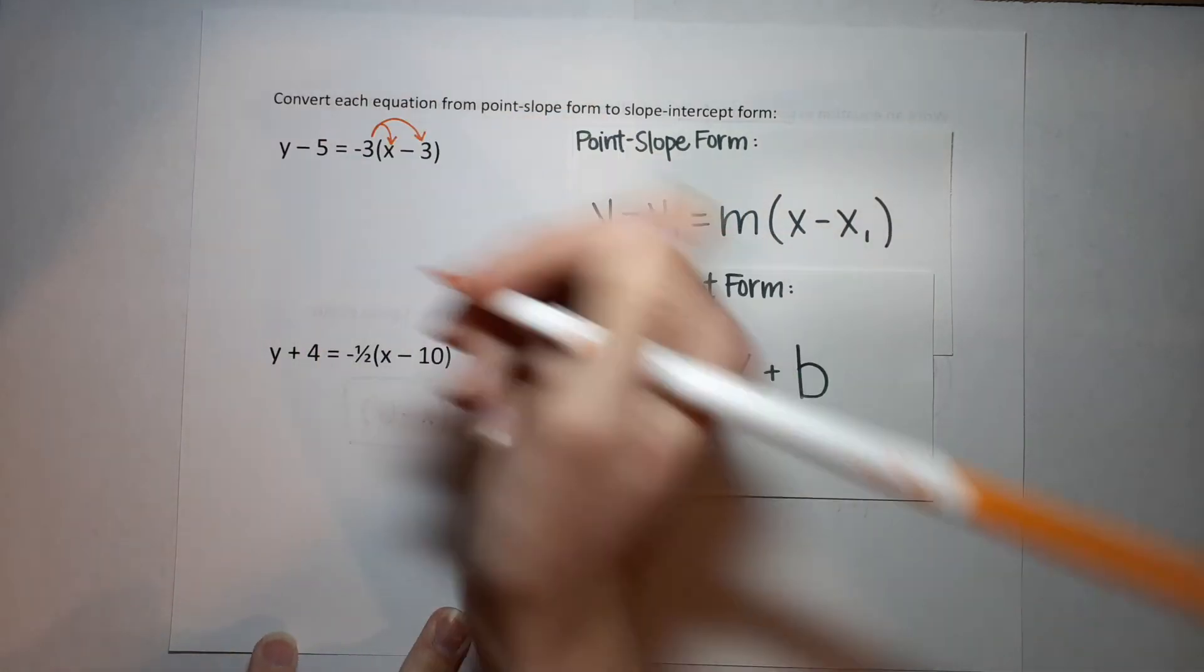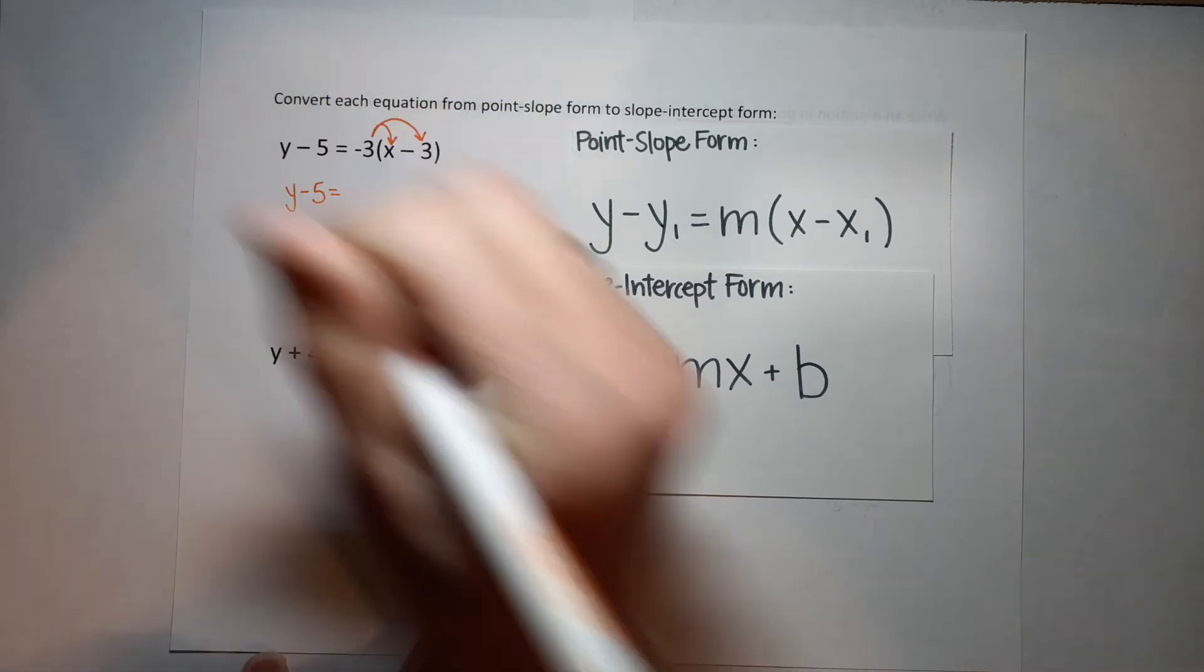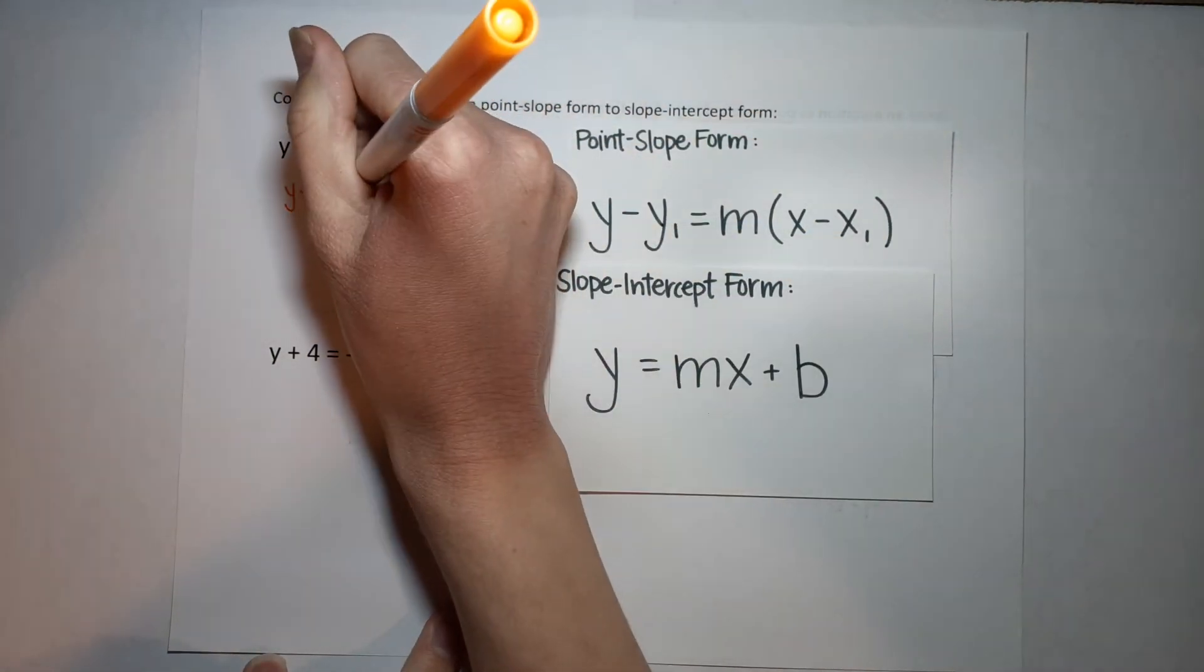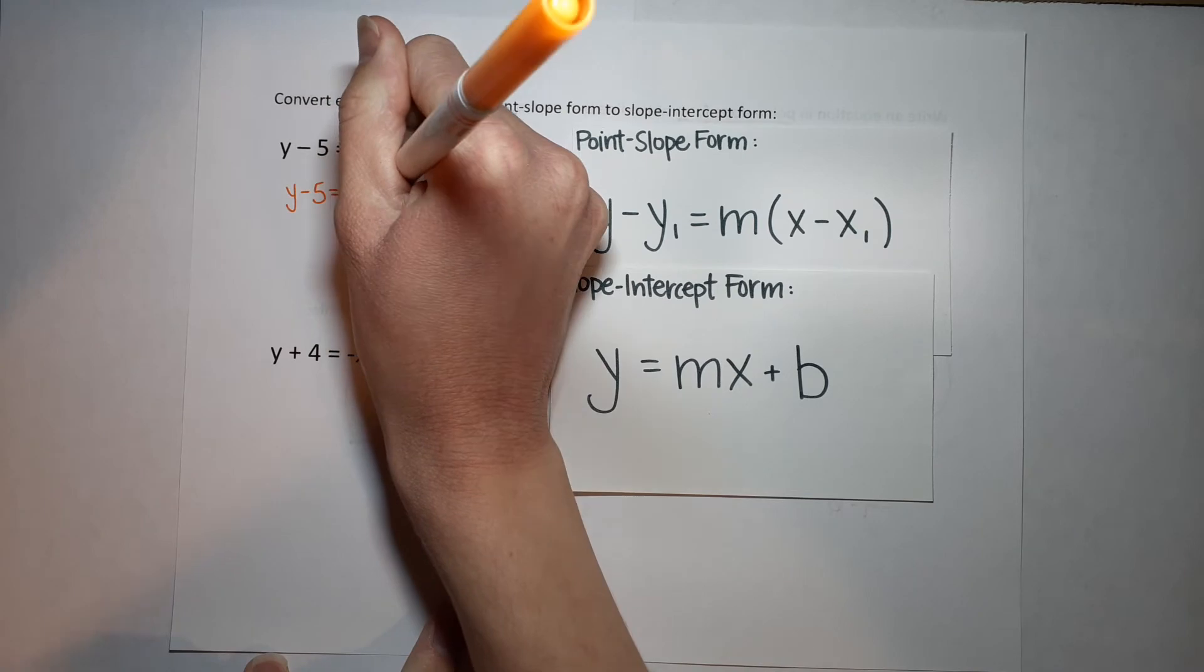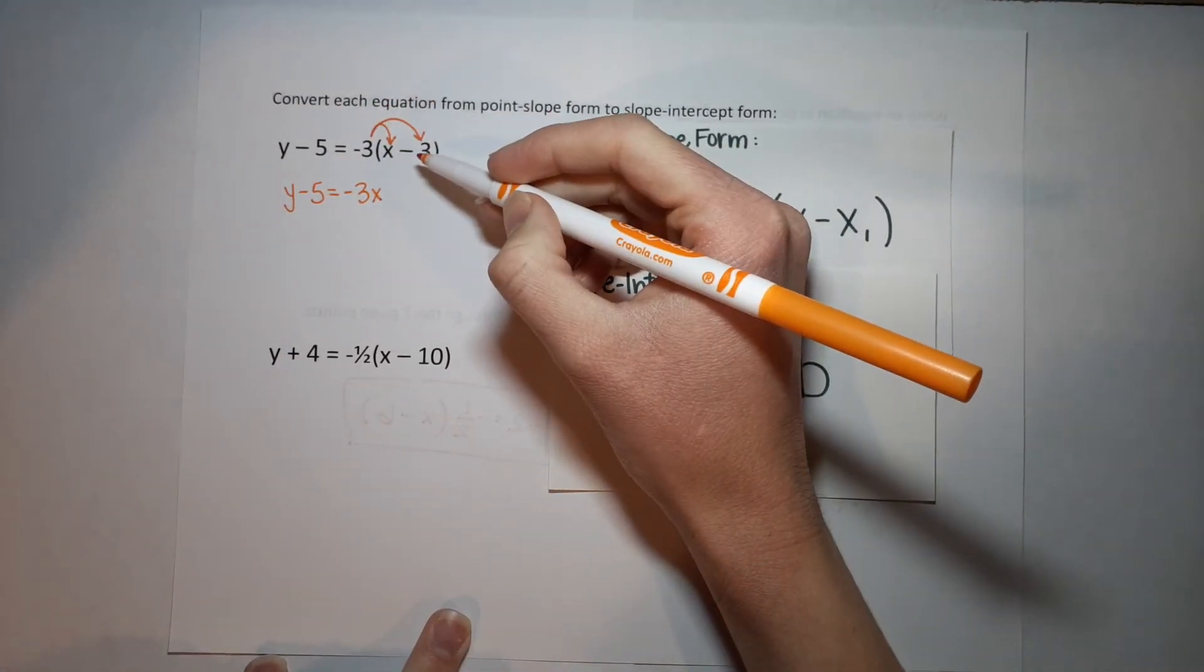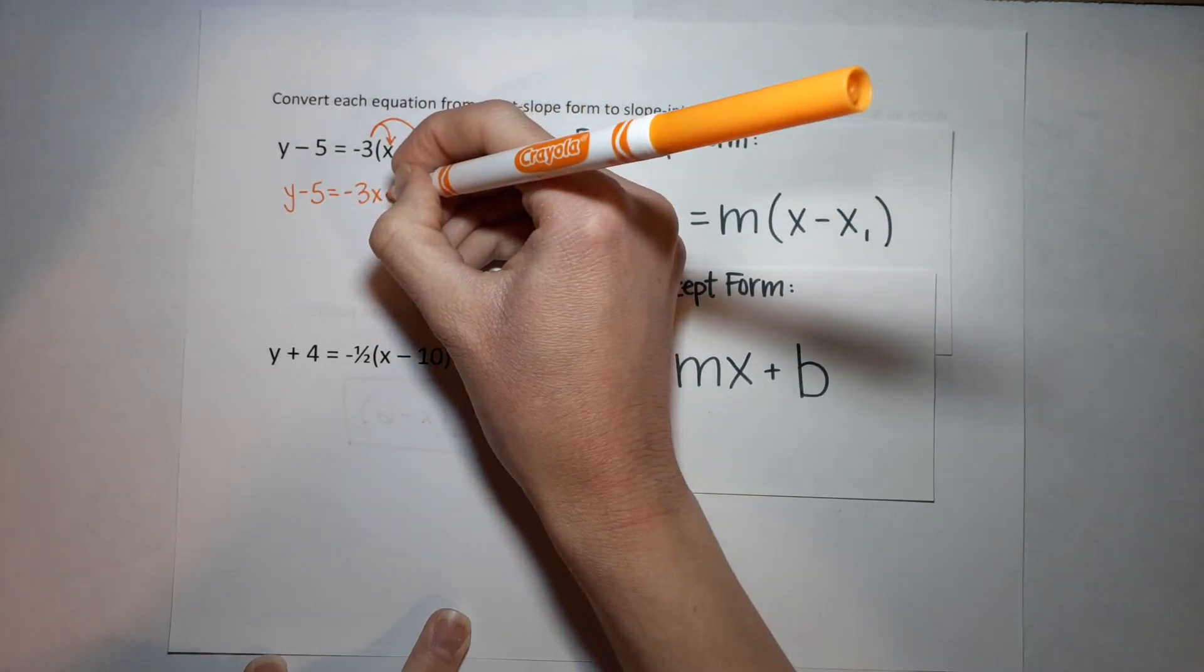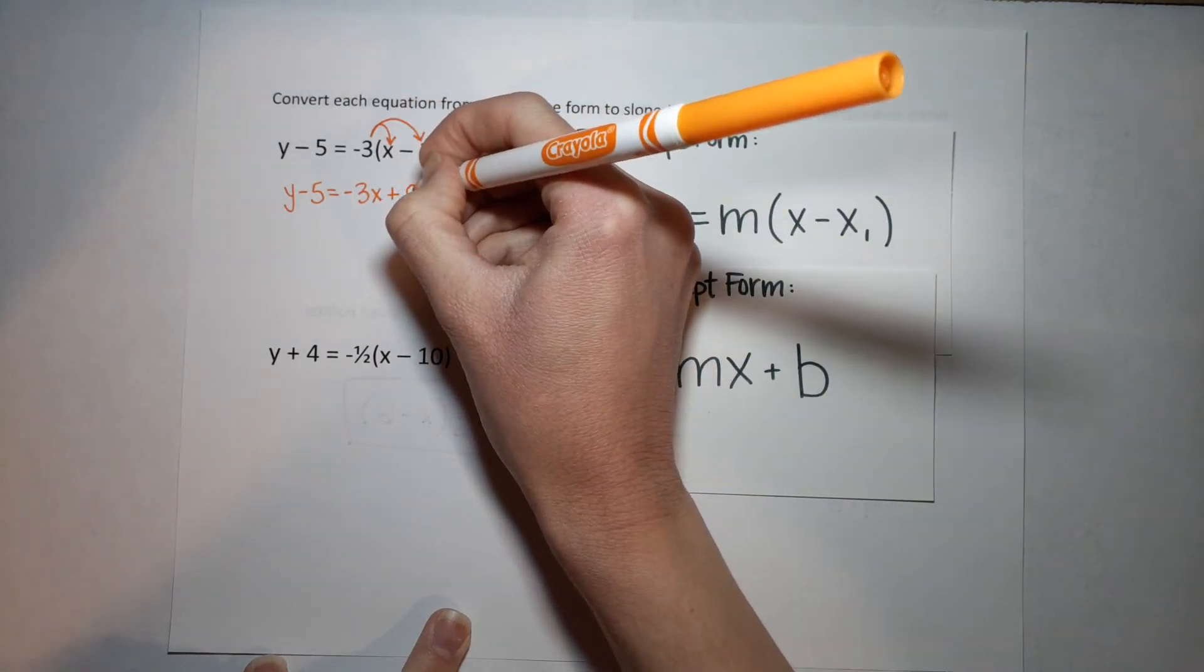So now, when I do that, I've got y minus 5 still over here, equals negative 3 times x just gives me a negative 3x. Negative 3 times negative 3. A negative times a negative always gives me a positive. 3 times 3 is 9.